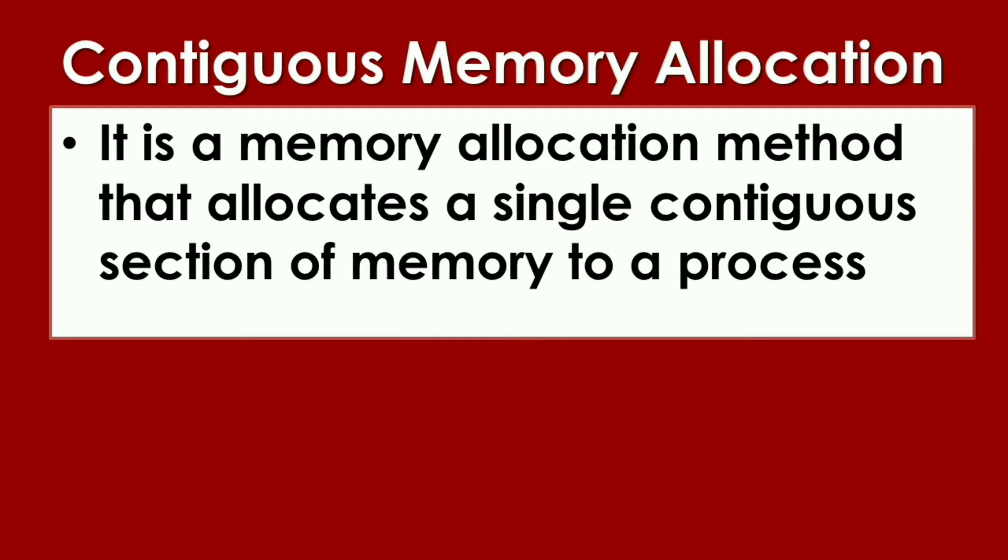What is Contiguous Memory Allocation? It is a memory allocation method that allocates a single contiguous section of the memory to a process. From the word Contiguous, it means it is a touch or it is part of the memory.